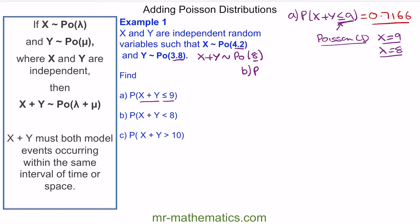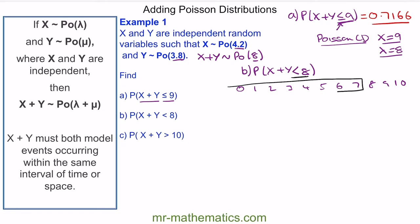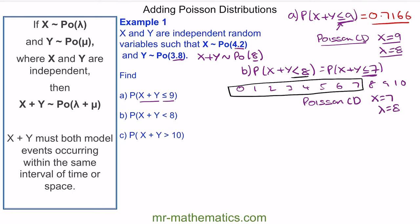For part B, the probability of x plus y being less than 8. To work this out using a cumulative distribution, we list the outcomes from 0 to 10. Because we're looking for less than 8, we go up to and including 7. So this is the same as x plus y being less than or equal to 7, which we can use our cumulative distribution for. Using Poisson CD with x equal to 7 and lambda equal to 8 gives us a probability of 0.4530.